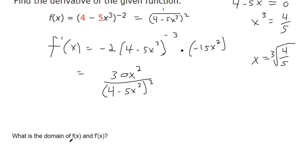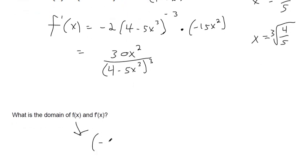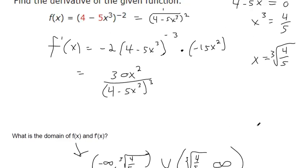If x is the cube root of four fifths, then we're going to have a divide by zero problem. So the domain of f(x) would be everything except this value: negative infinity up to the cube root of four fifths, and then we can pick up the domain starting to the right of the cube root of four fifths to positive infinity.